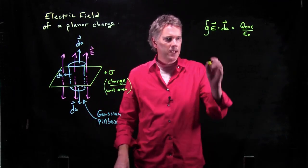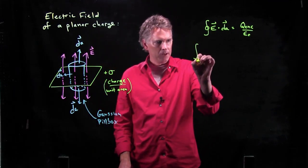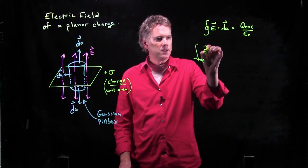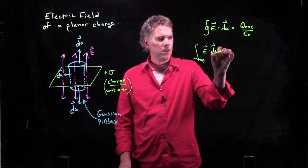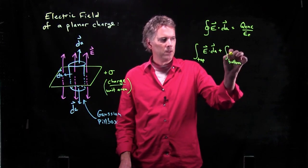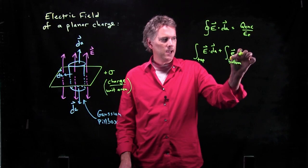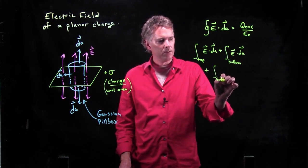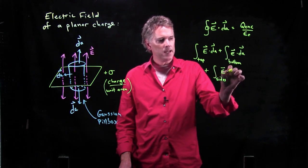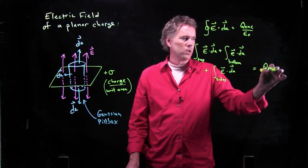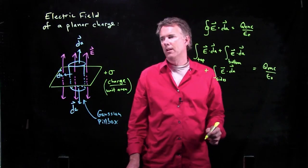So what does the integral become? The integral becomes an integral over the top of E dot DA, plus an integral over the bottom of E dot DA, plus an integral over the sides of E dot DA. And all of that has to equal Q enclosed over epsilon naught.